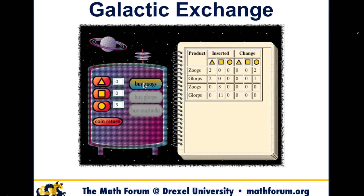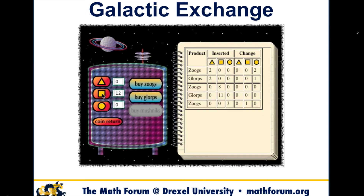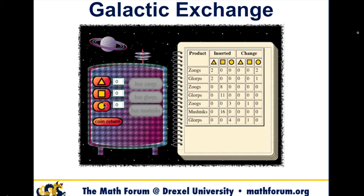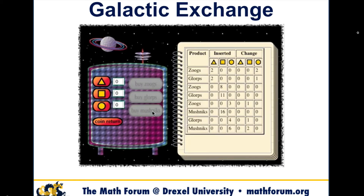Kids are developing intuition and methods for thinking about simultaneous equations without even having to be able to spell 'simultaneous.' They don't know anything about that, but they interact with this and go to town figuring out how the values of the different coins are related. They go, oh wait, buy this with this and see what happens — they want to know, they have ideas. When these kids get to real simultaneous equations and formal procedures, they have that background.